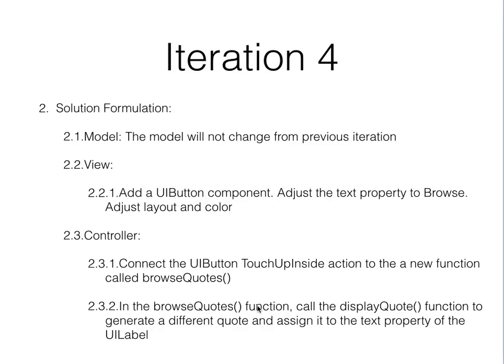Inside the browseCodes function, we put the instructions that cause the label to change. We already know how to do that because in viewDidLoad — a built-in event — we called a function called displayCode, which generated a quote at random and reset the label. I don't need to reinvent the wheel. It's bad practice in software to duplicate steps. If there's already a function that generates a quote and resets the label, I just need to call that function — a single instruction inside browseCodes.